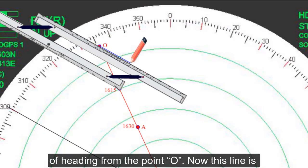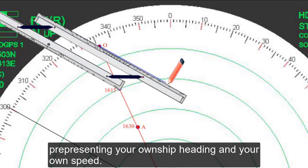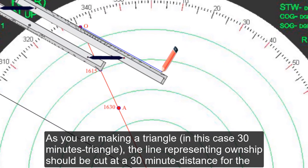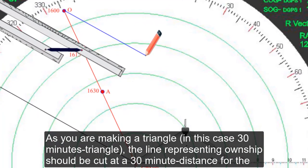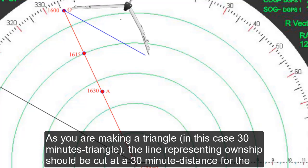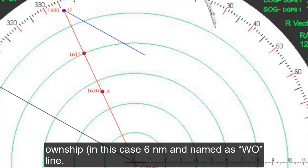Now this line is representing your own ship heading and your own ship's speed. As you're making a triangle—in this case a 30-minute triangle—the line representing own ship should be cut at a 30-minute distance for the own ship. In this case, 6 nautical miles, and name it as WO line.